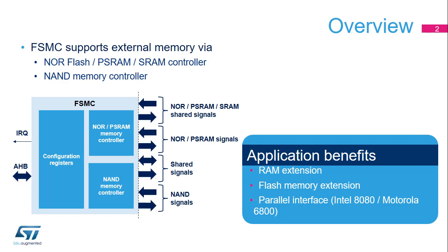The benefits of the FSMC controller include not only RAM and Flash memory space extension, but also the ability to interface seamlessly with most LCD controllers which support Intel 8080 and Motorola 6800 modes. This LCD parallel interface capability makes it easy to build cost-effective graphic applications using LCD modules containing embedded controllers or high-performance solutions using external controllers with dedicated acceleration.